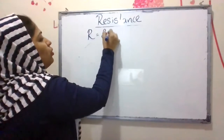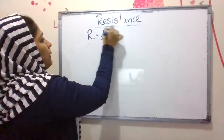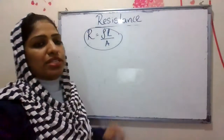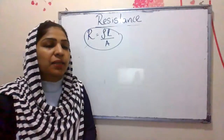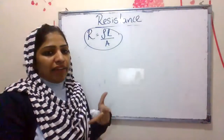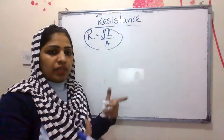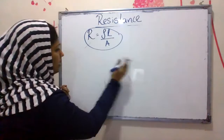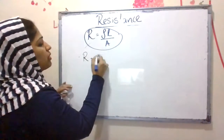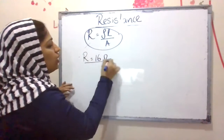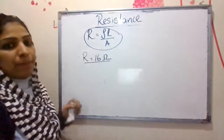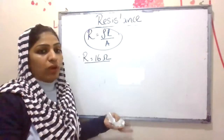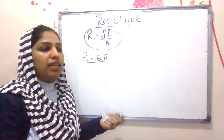R is equal to rho L divided by A. For example, if a wire has resistance of 16 ohm, what happens to the resistance if you increase the length to twice its original length?